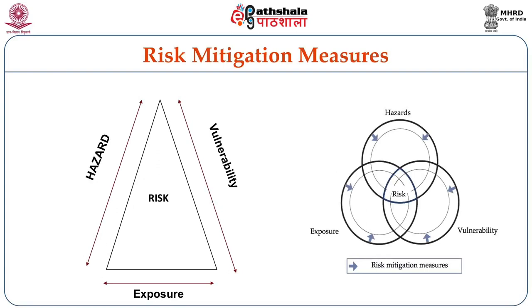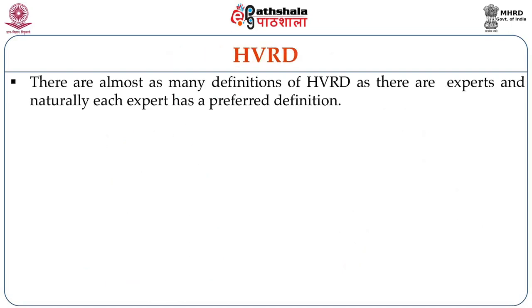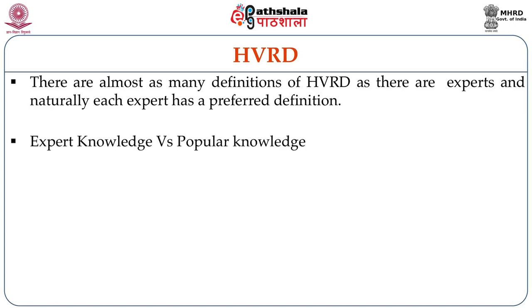If you reduce the hazard, the risk will reduce. If you reduce the exposure, it will reduce the risk. If you reduce the vulnerability, it will reduce the risk. But the point is, as social science students, you may have to concentrate more on finding pathways for reducing vulnerability so that risk is reduced. There are almost as many definitions of hazard, vulnerability, risk and disaster as there are experts — each expert has a preferred definition, which may yield some confusion, but this module will help sort that out. Expert knowledge and popular knowledge are both important, and there should be a blend.